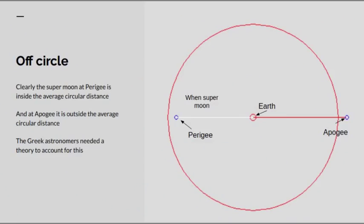Now, I've drawn here the Earth and the Moon, and here is a perfect circle. When the Moon appears as a supermoon, when it's in perigee, or the closest position to the Earth, the distance has to be less than the average radius of the circle. And when it's furthest away, the distance has to be greater than the average radius of the circle. So the perigee and apogee are Greek astronomical terms for these positions. And they needed to have a theory to account for this variation in distance, which they could observe.